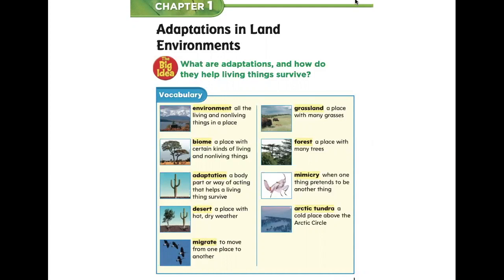Our fifth vocabulary word is migrate. Migrate means to move from one place to another. Our sixth vocabulary word is grassland. A grassland is a place with many grasses. Our seventh vocabulary word is forest. Forest is a place with many trees. Our eighth vocabulary word is mimicry. Mimicry is when one thing pretends to be another thing. And our last and final vocabulary word for chapter one is arctic tundra. Arctic tundra is a cold place above the arctic circle.